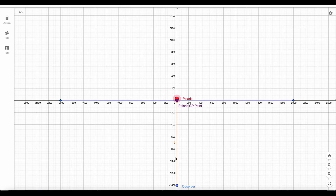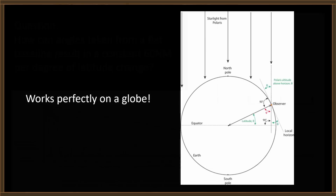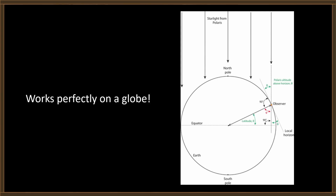Question, Brian. How can angles taken from a flat baseline stretching from the observer to the GP of Polaris result in a constant 60 nautical miles per degree of latitude change? That just doesn't work. You know where it does work? It works perfectly on a globe.